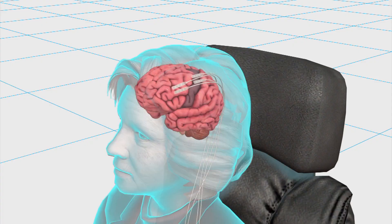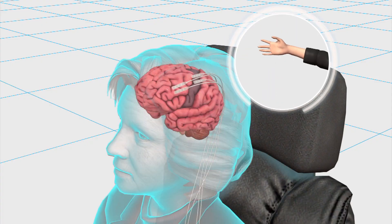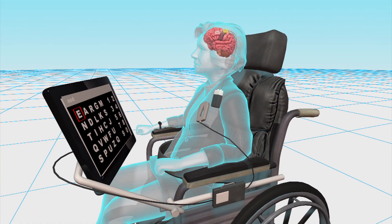The patient thinks about moving her right hand to activate the electrodes, which triggers the electrodes to send signals down to the transmitter in the chest. This allows the patient to move a cursor with her hand to make an input on the computer screen.